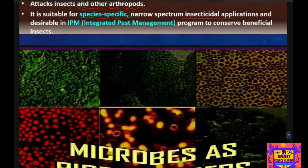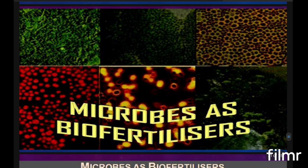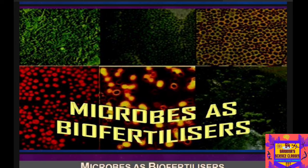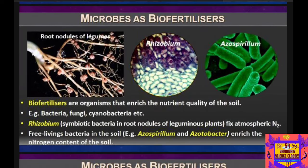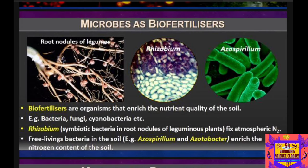Now we will learn about microbes that can be used as bio fertilizers. Bio fertilizers are organisms that enrich the nutrient quality of the soil. Continuous use of chemical fertilizers kills soil fertility, whereas bio fertilizers enrich the soil without destroying its natural fertility. The main sources of bio fertilizers are bacteria, fungi, and cyanobacteria.